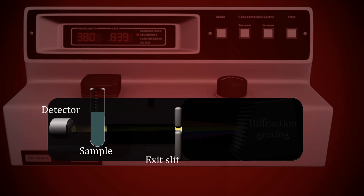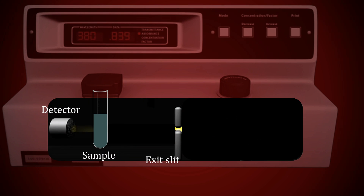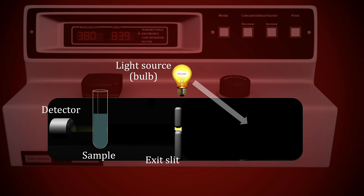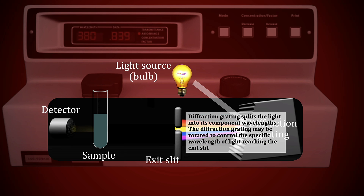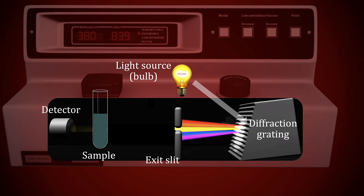Here's how a spectrophotometer works. A light source, typically a bulb of some kind, shines light on a diffraction grating which acts as a prism and splits the light into its component wavelengths. The grating can be rotated to direct the light towards the exit slit so that only light of a certain wavelength exits the slit and enters the sample.